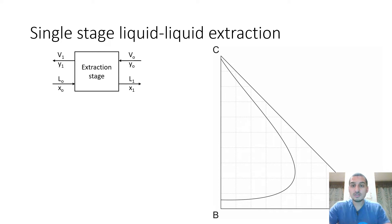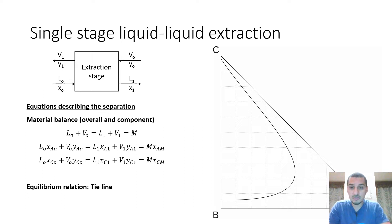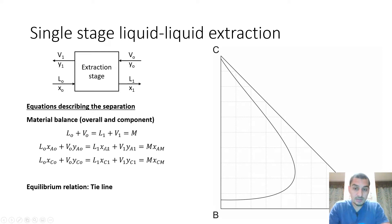What we mentioned before is that we have a single stage. We know the feed flow rate, which is L-node, and the composition of the feed. We know the solvent flow rate and the composition of the solvent. The overall material balance gives us: V-node plus L-node equals V1 plus L1, which equals M. We did the same for the component material balance — once for the solute and once for the solvent — using mass fractions X-node and Y-node in the feed and solvent.